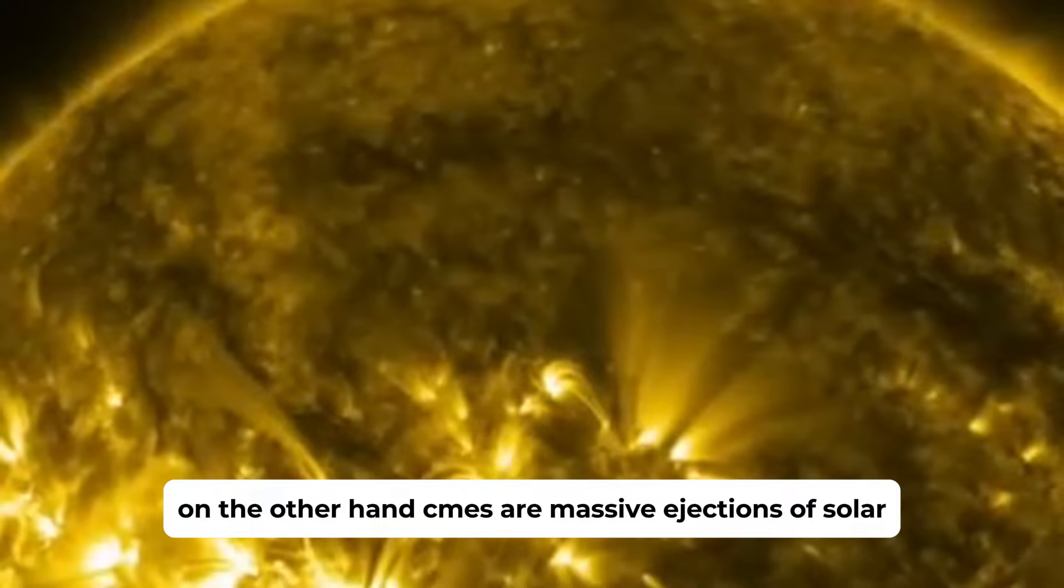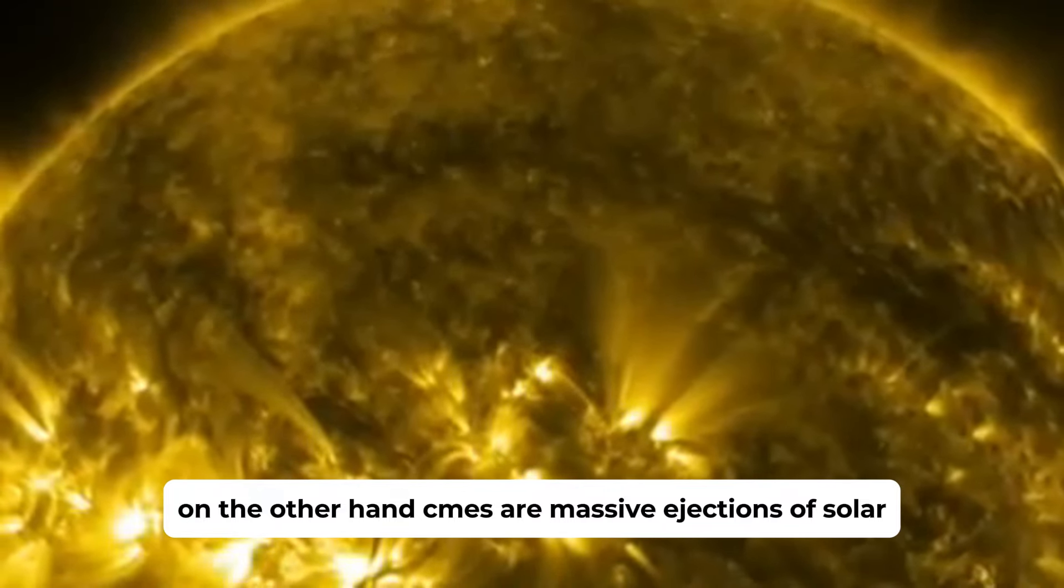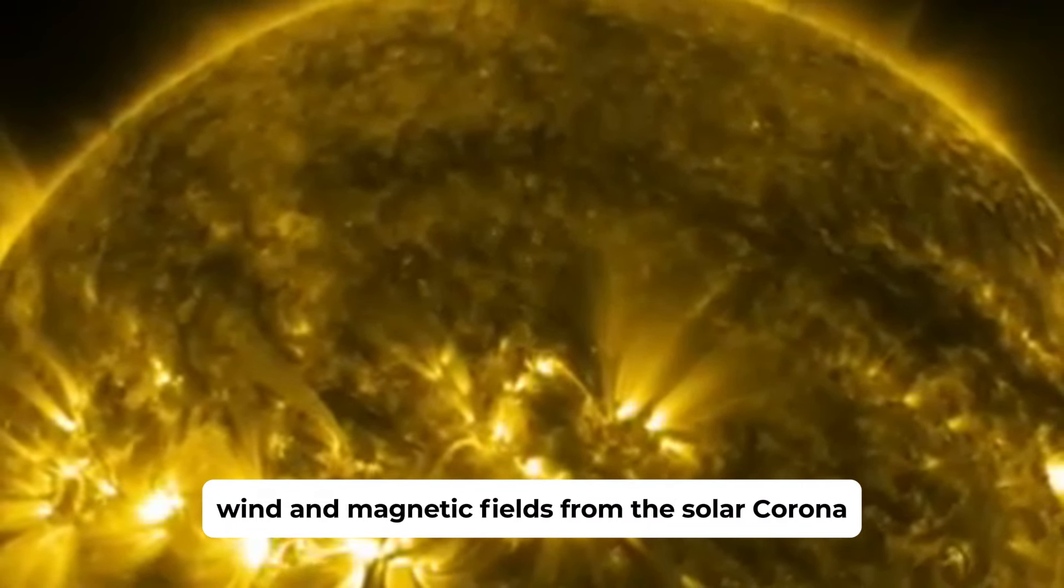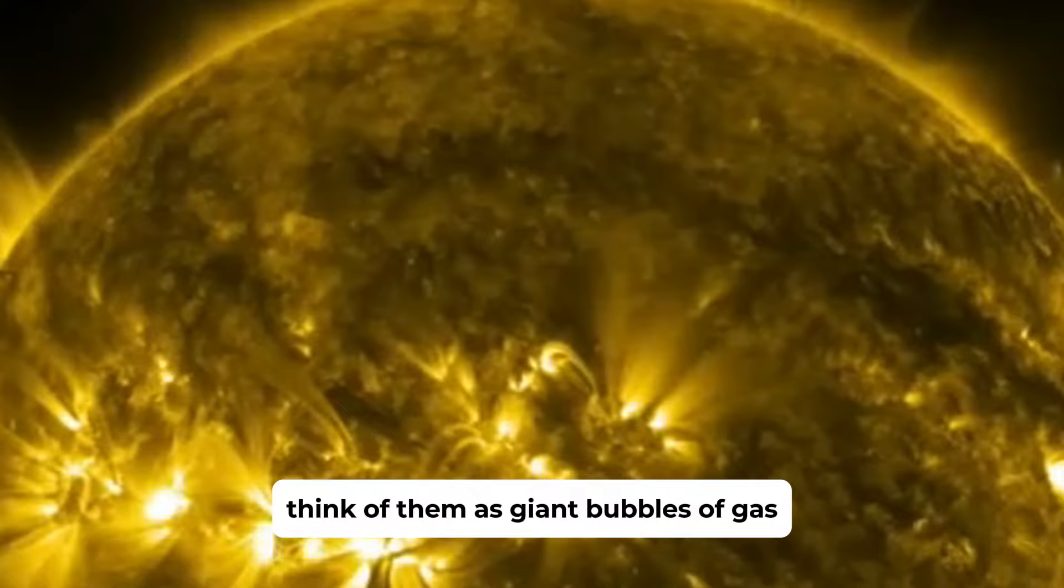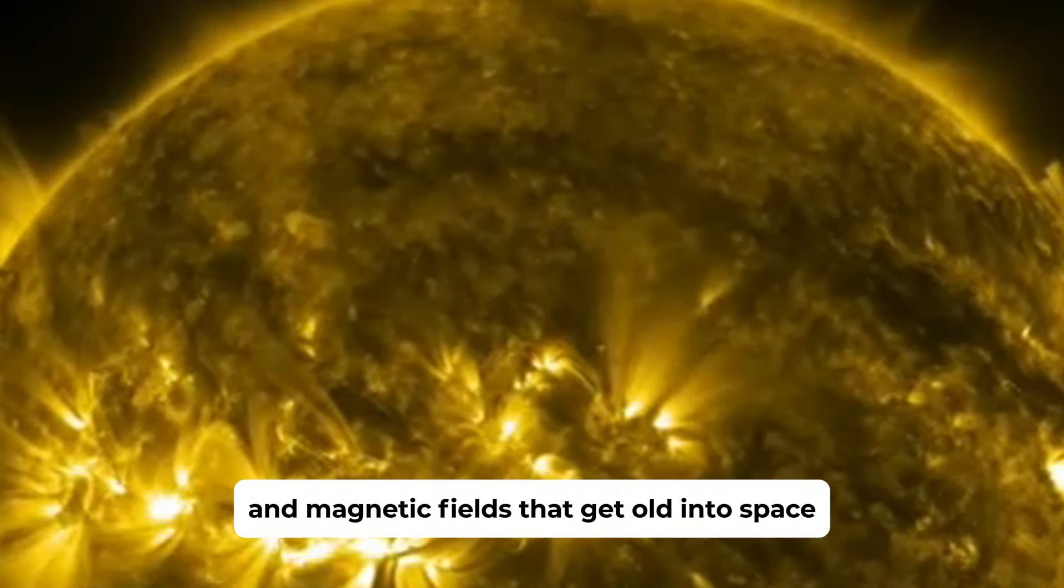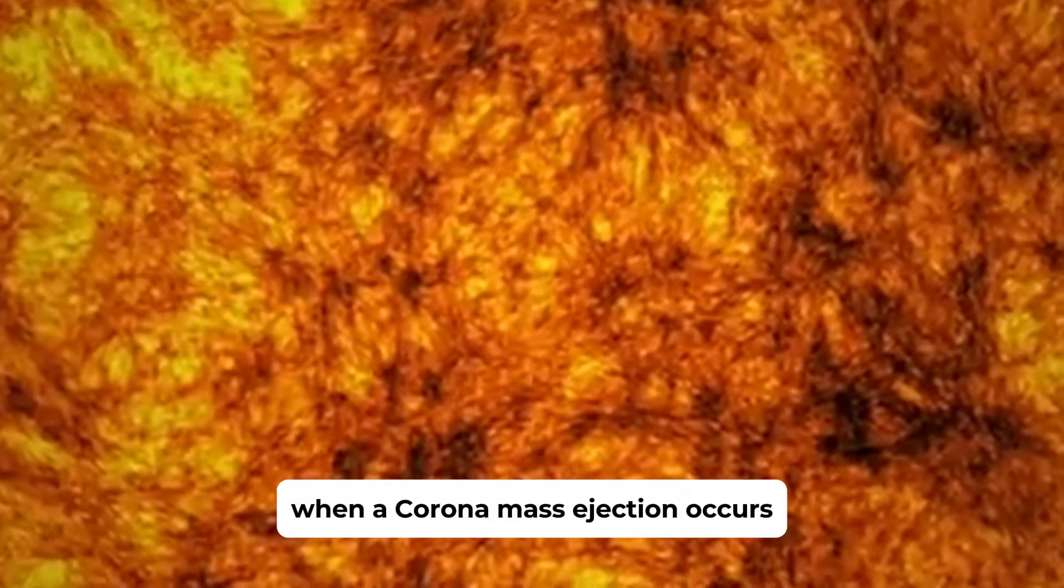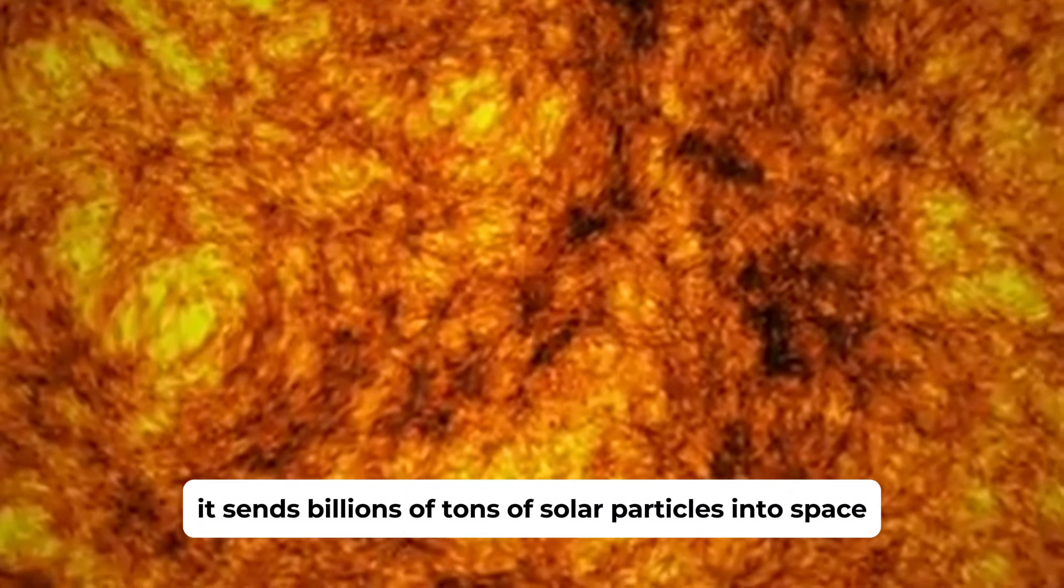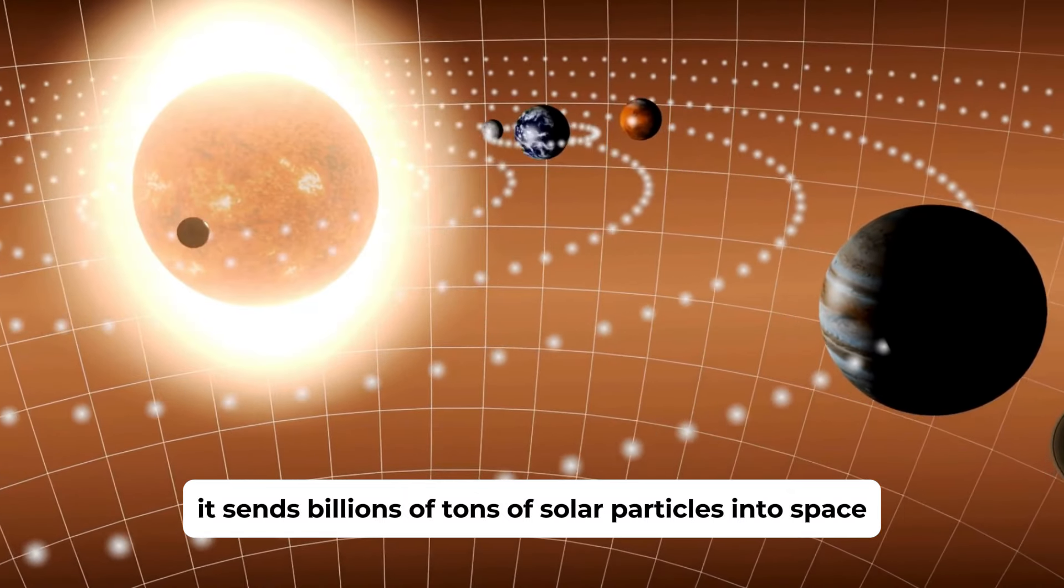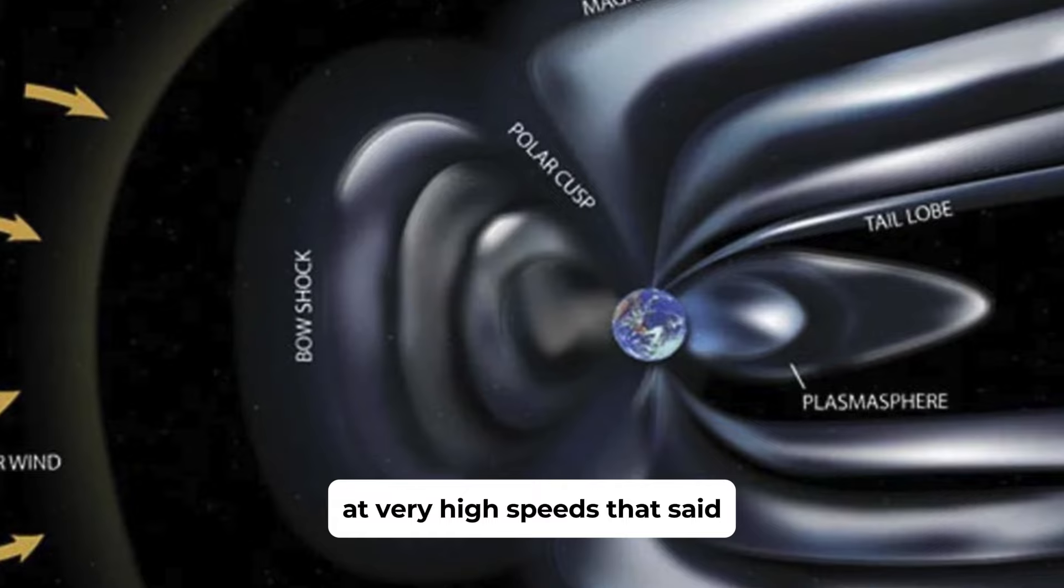On the other hand, CMEs are massive ejections of solar wind and magnetic fields from the solar corona. Think of them as giant bubbles of gas and magnetic fields that get hurled into space. When a coronal mass ejection occurs, it sends billions of tons of solar particles into space at very high speeds.